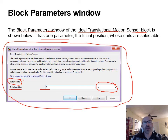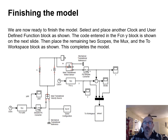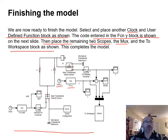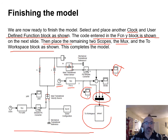To finish the model, add another clock and a user-defined function block for y(t), two more scopes, a MUX, and a To Workspace block. The output from the PS-Simulink converter (from Simscape Utilities library) connects to the Simulink input, and everything connects down to the final workspace block labeled sim-out, completing the model.